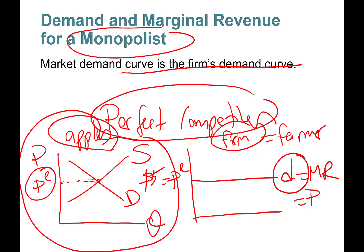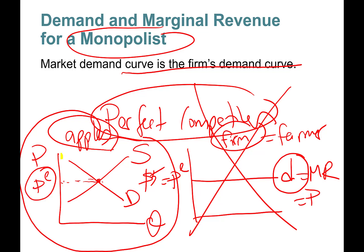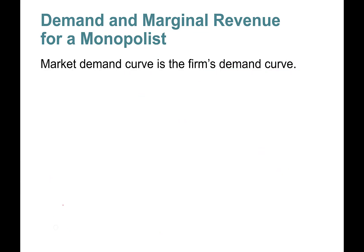We're talking about the monopolist. The monopolist doesn't share the market with others — the monopolist commands the entire market demand curve. So this downward sloping demand curve belongs to the monopolist because there are no competitors. Obviously apples is a perfectly competitive market, not a monopoly, but something else would be. So the market demand curve is the firm's demand curve — this is what it looks like.